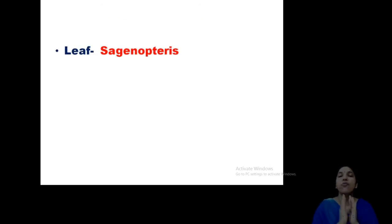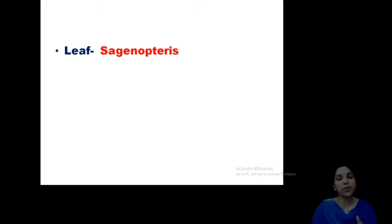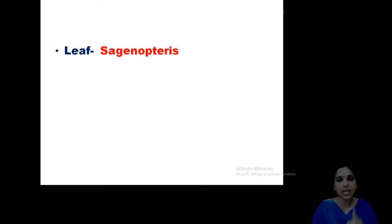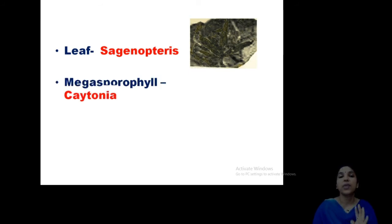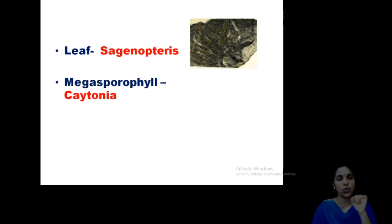The leaf part of Chitoniaceae is known as Sagenoteris. You have to remember the term 'pteris' that is concerned with leaves, usually in the case of fossils. So Sagenoteris is the leaf part — this is the compressed or fossilized leaf part. And the megasporophyll is Chitonia.